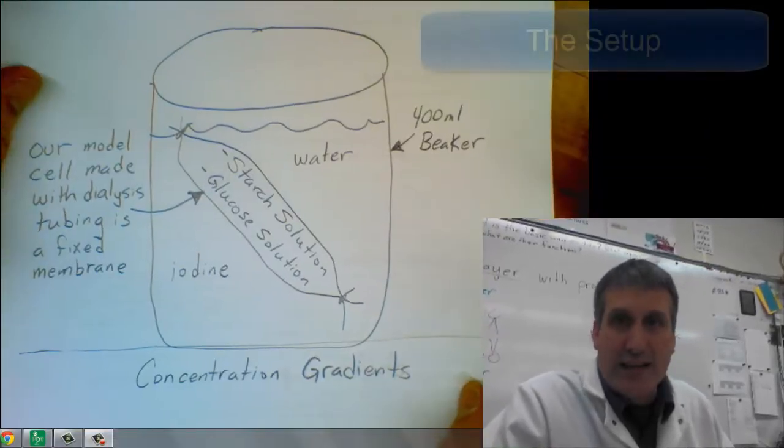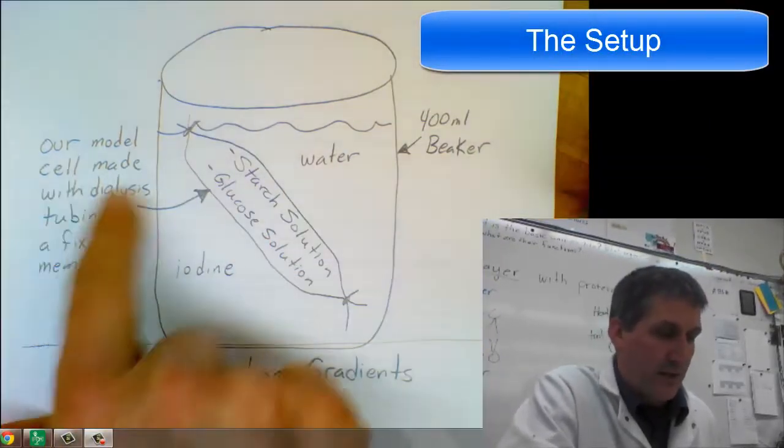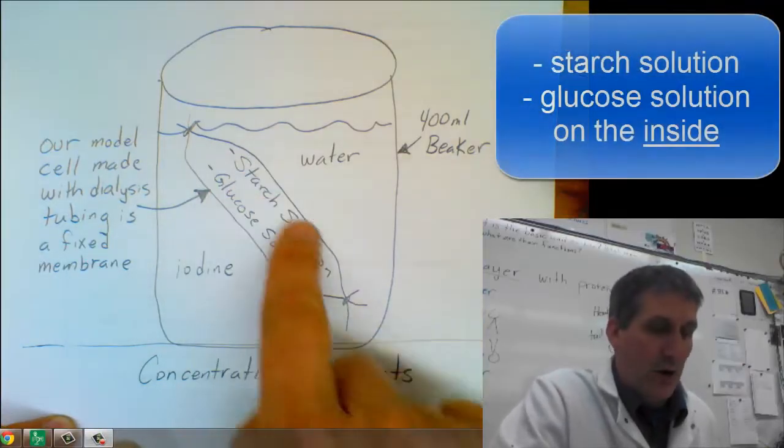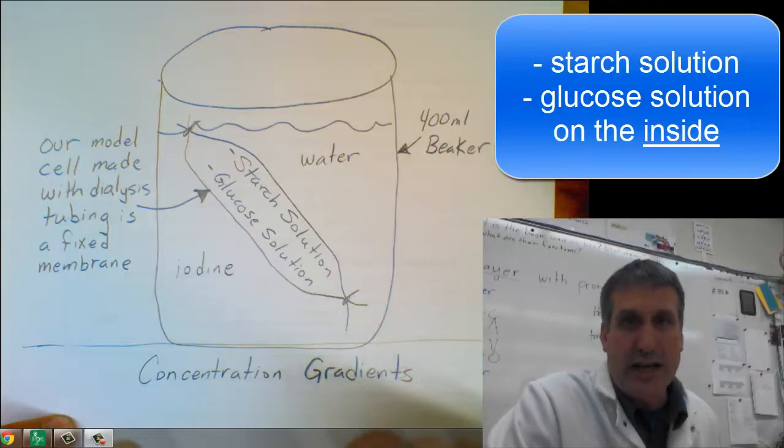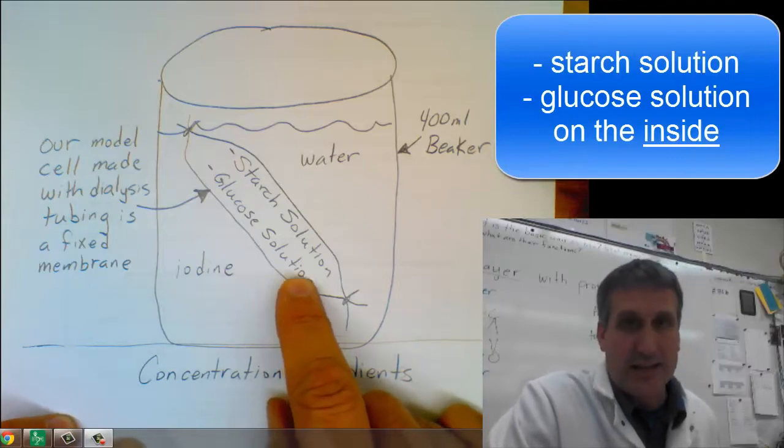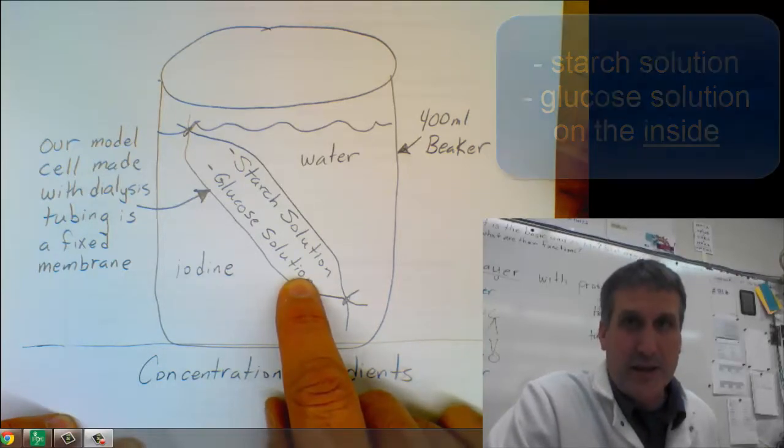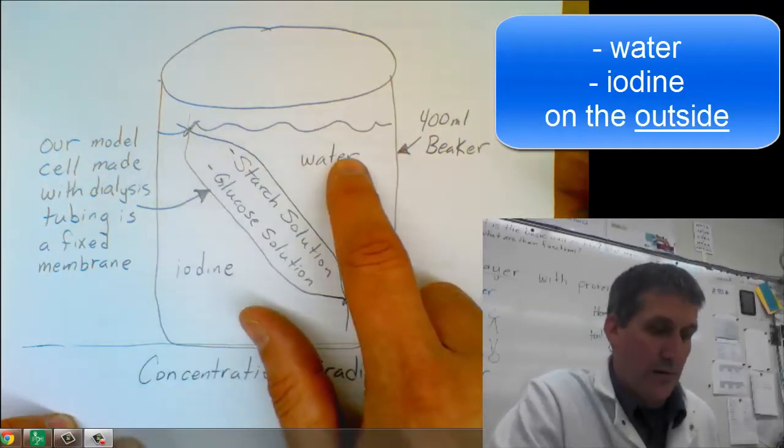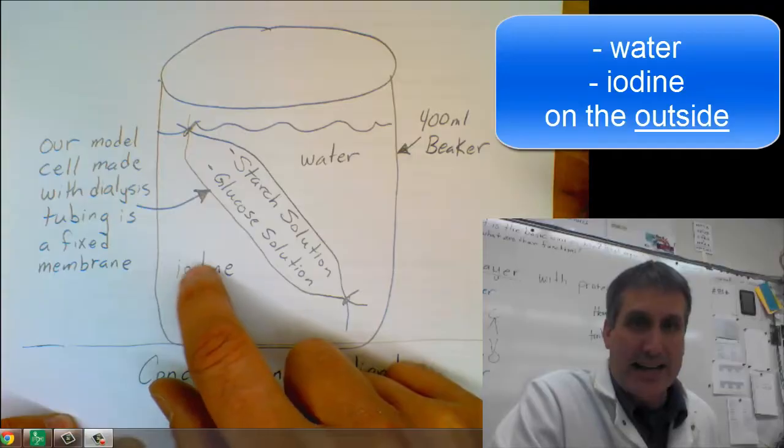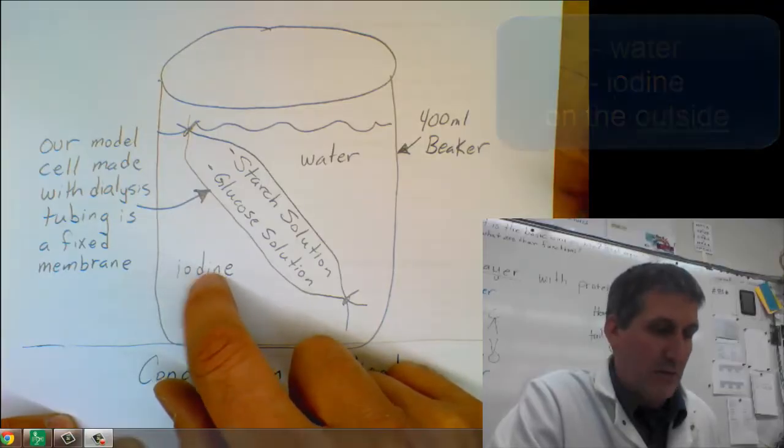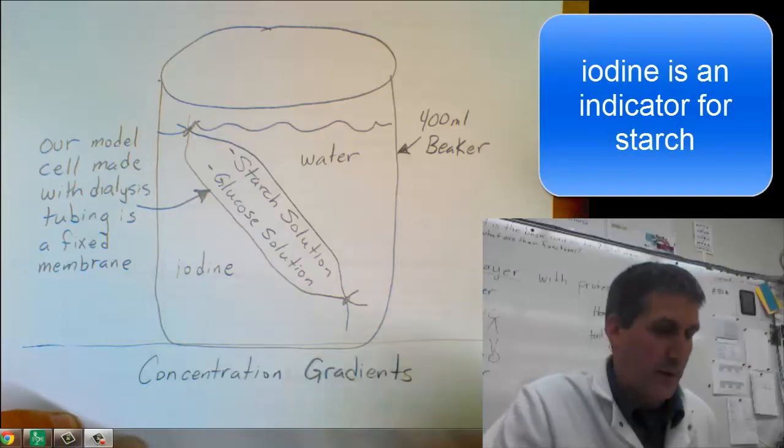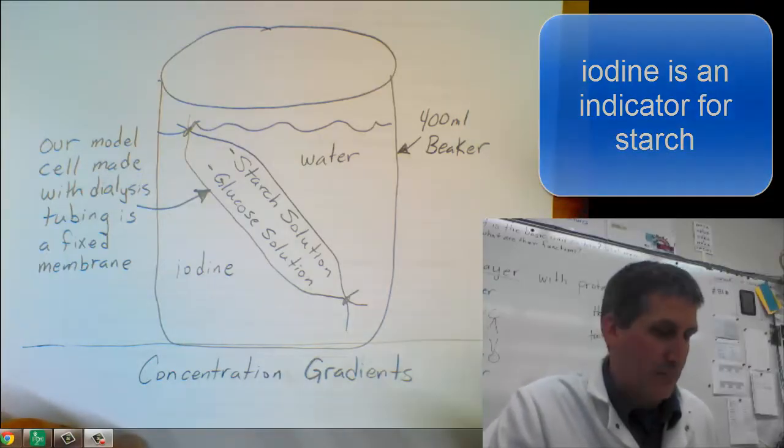The goal of this is we're going to make our artificial cell made with dialysis tubing. It's a fixed membrane and we're going to put starch solution and glucose solution inside of our artificial cell and then on the outside we're going to fill a beaker, a 400 milliliter beaker, with water and then we're going to add iodine to the outside of the cell. Iodine is actually an indicator for starch and that will be important during this lab so keep that in mind.